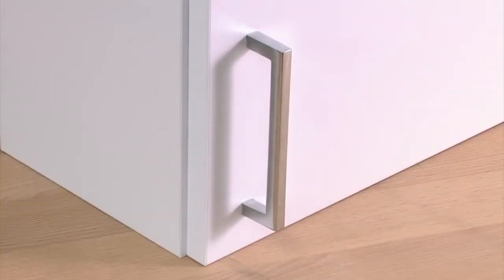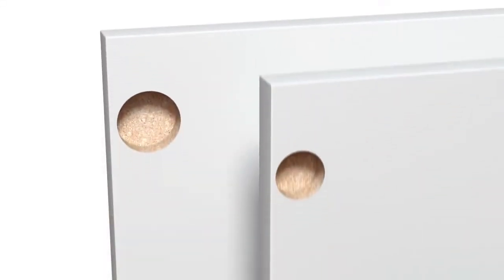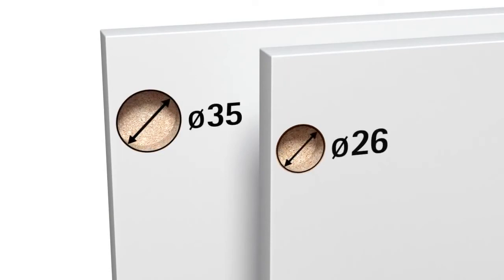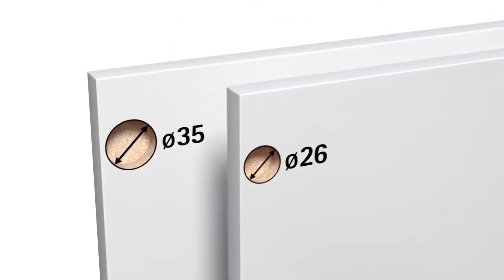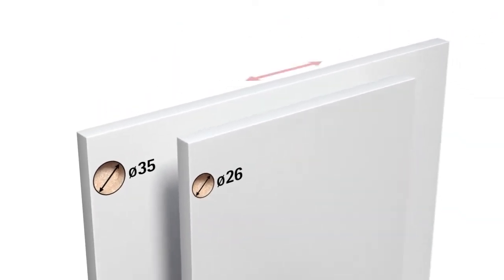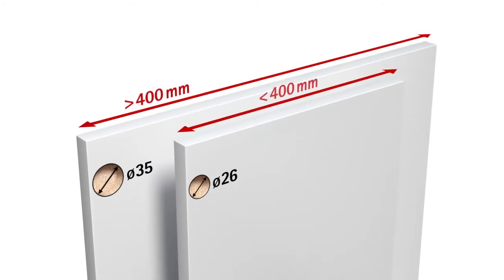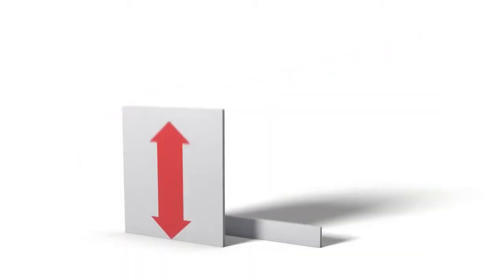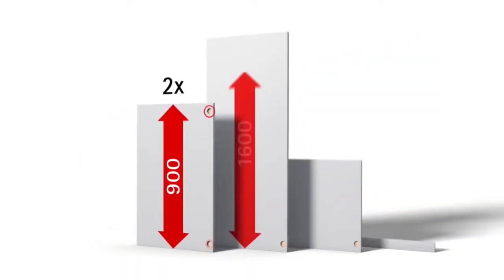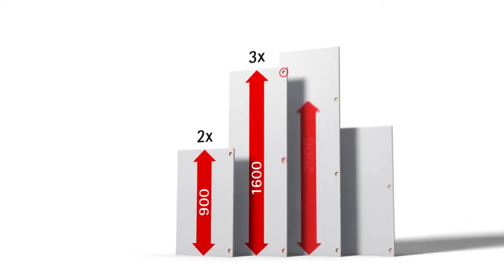But how many hinges do you need and in which size? As a rule of thumb you can say, use small hinges with 26mm cups for doors in widths up to 400mm and hinges with 35mm cups for wider doors. Door height determines the number of hinges per door.